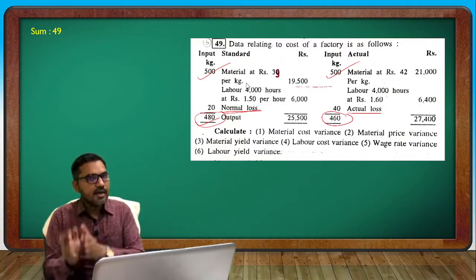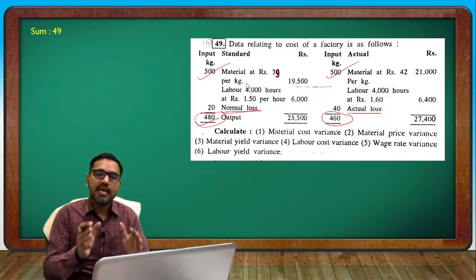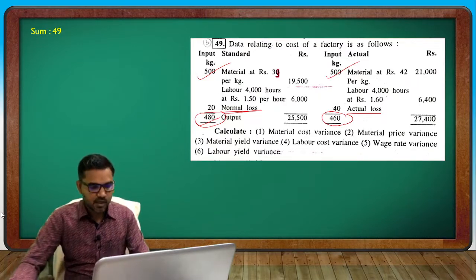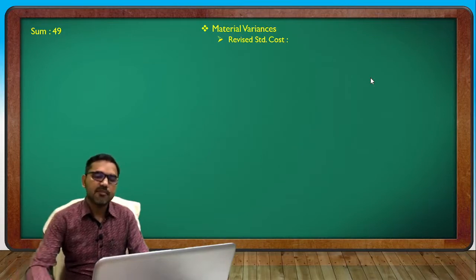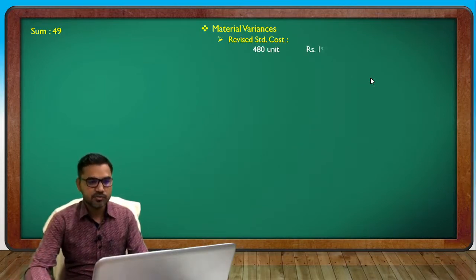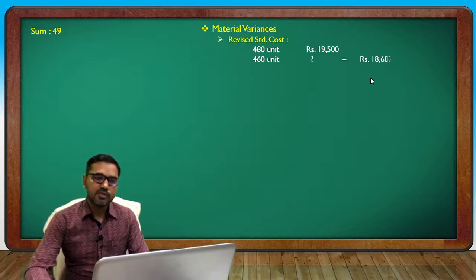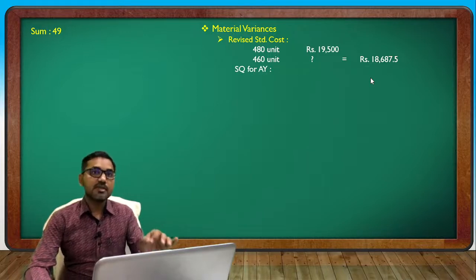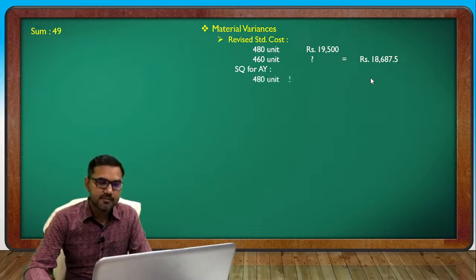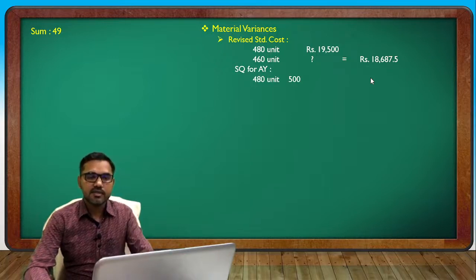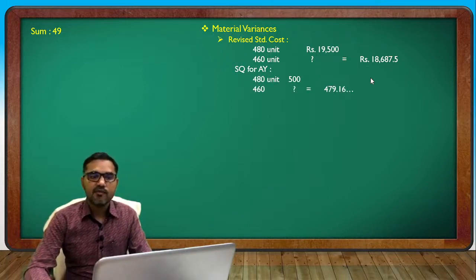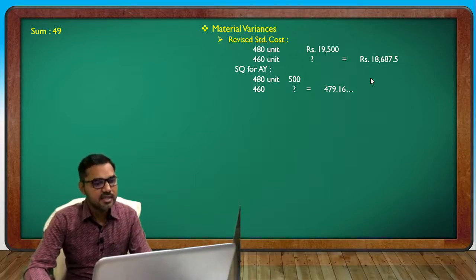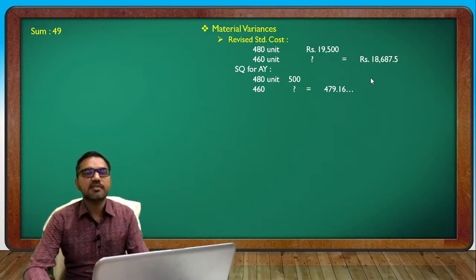480 is 19,500. So how much at 460? Same for material and labor. Cost of 860, 16.65. Standard cost quantity for actual yield: 48 to 500, rate 460, 479.16. Average 666.